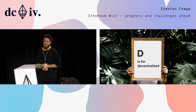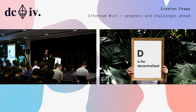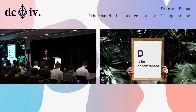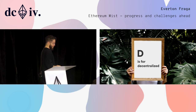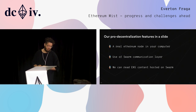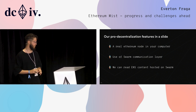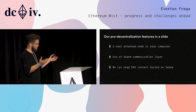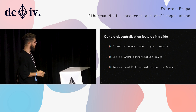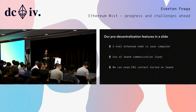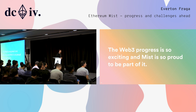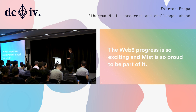Remember, the D in DApp stands for decentralized — and that applies to your own website and which kind of services you connect to. Mist really wants you to have a real Ethereum node in your computer, even if it's a lite client or ultra-lite client in a possible future. Use of the Swarm communication layer — and yes, we can read ENS content hosted on Swarm. So that's pretty much it. The Web3 progress is so exciting, and Mist is so proud to be part of it. Thank you so much, have fun.